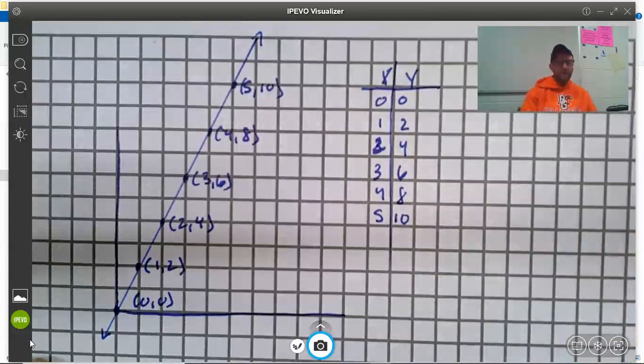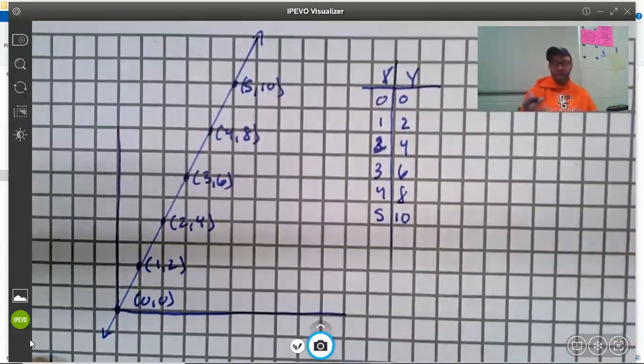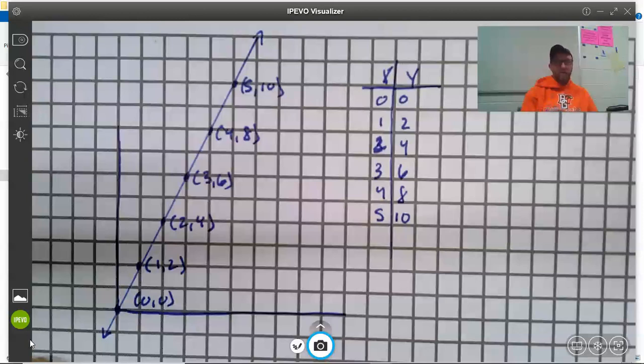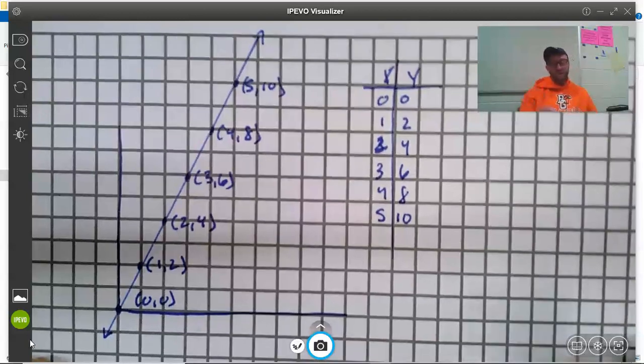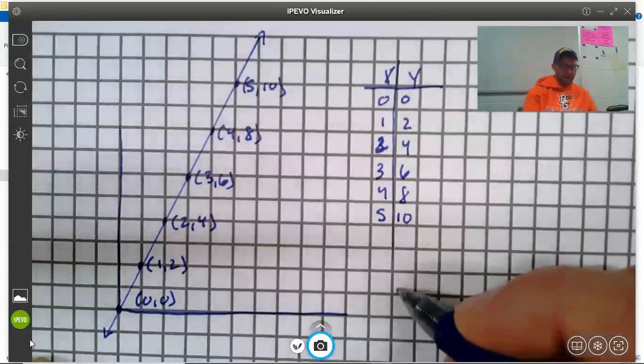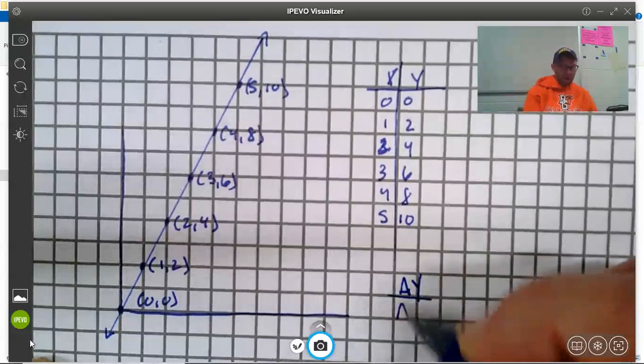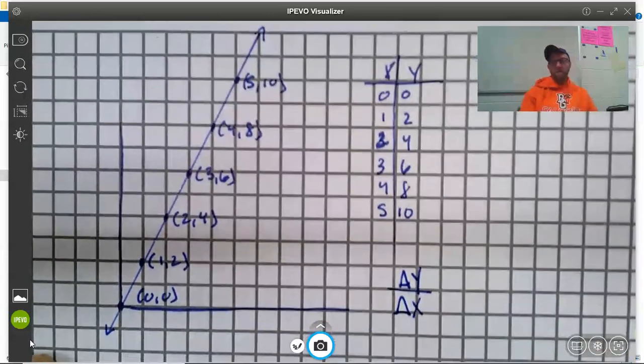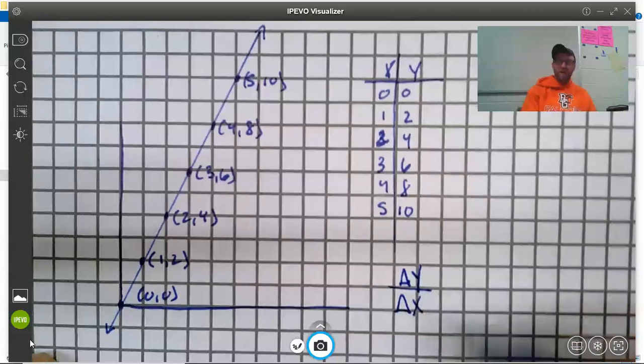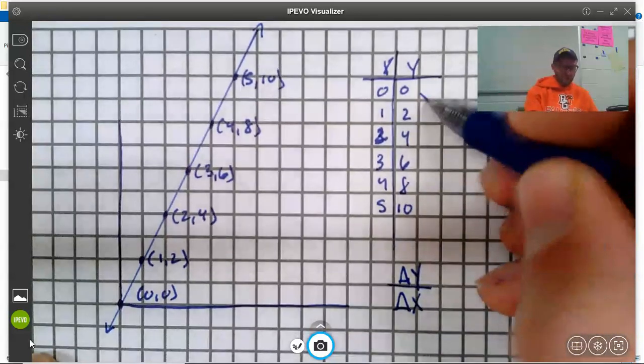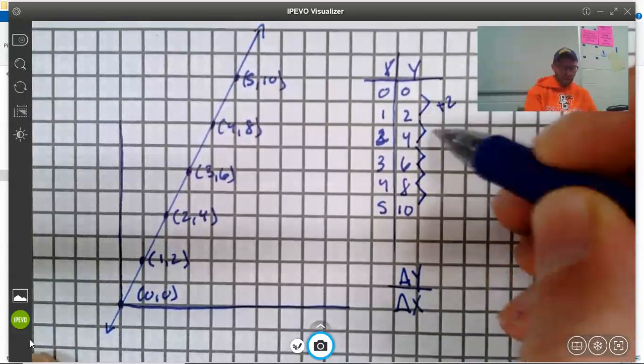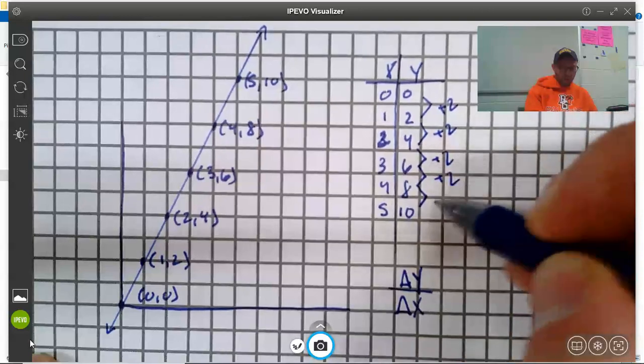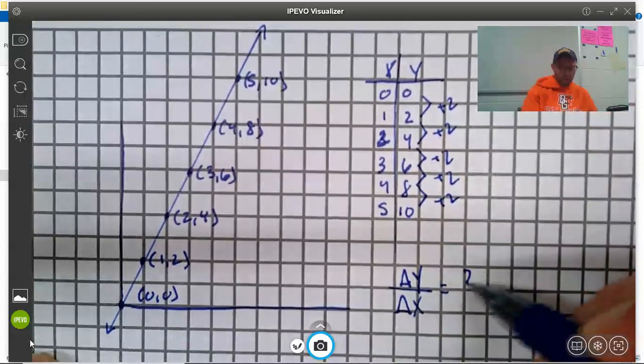And so what we kind of settle on as mathematicians is to write this relationship as a ratio represented specifically as a fraction. I know we all hate fractions. And that fraction is delta y over delta x. So the ratio of change in y to change in x. And we can see here that every single time we move, it's plus 2 on the y side.